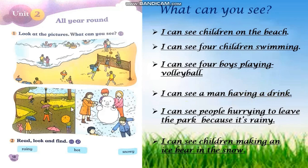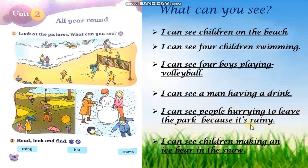Now, let's go to the next picture. Can you see some people here? They are trying to hurry. It's raining. So, can you see umbrellas? One, two, three, four, five. Five umbrellas and a little girl running as well. So, you're going to say: I can see people hurrying to leave the park because it's raining.